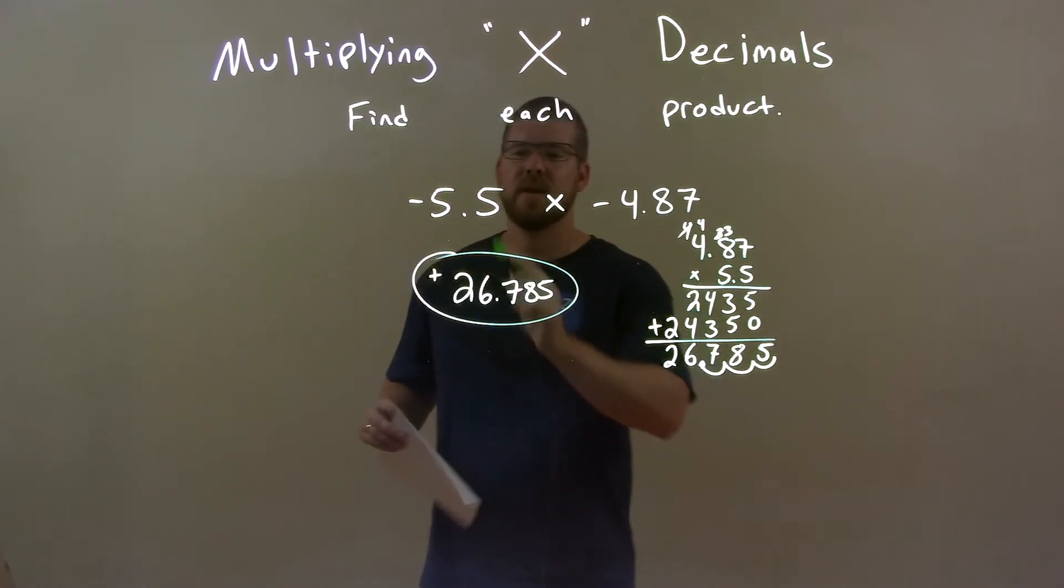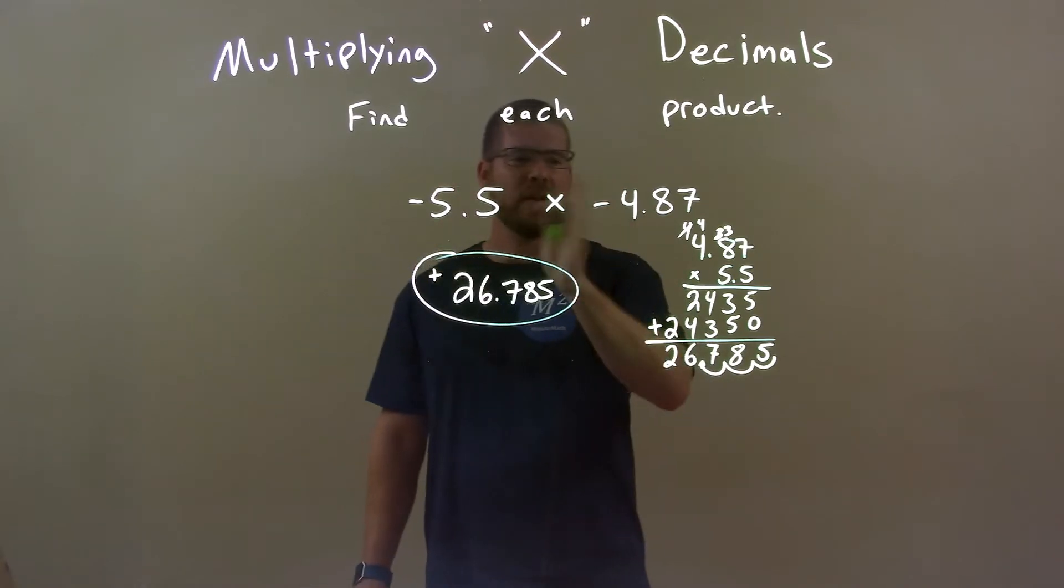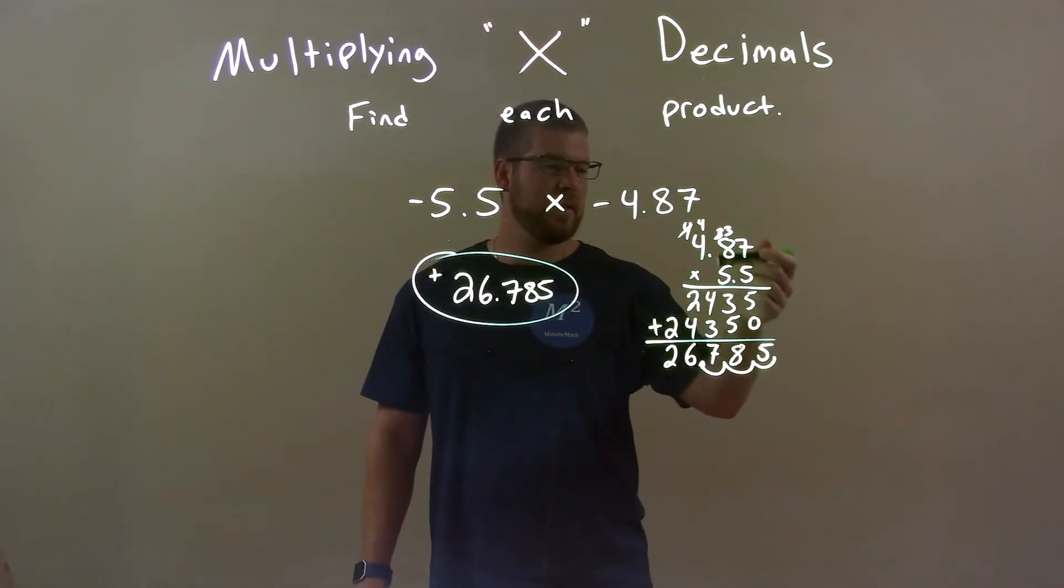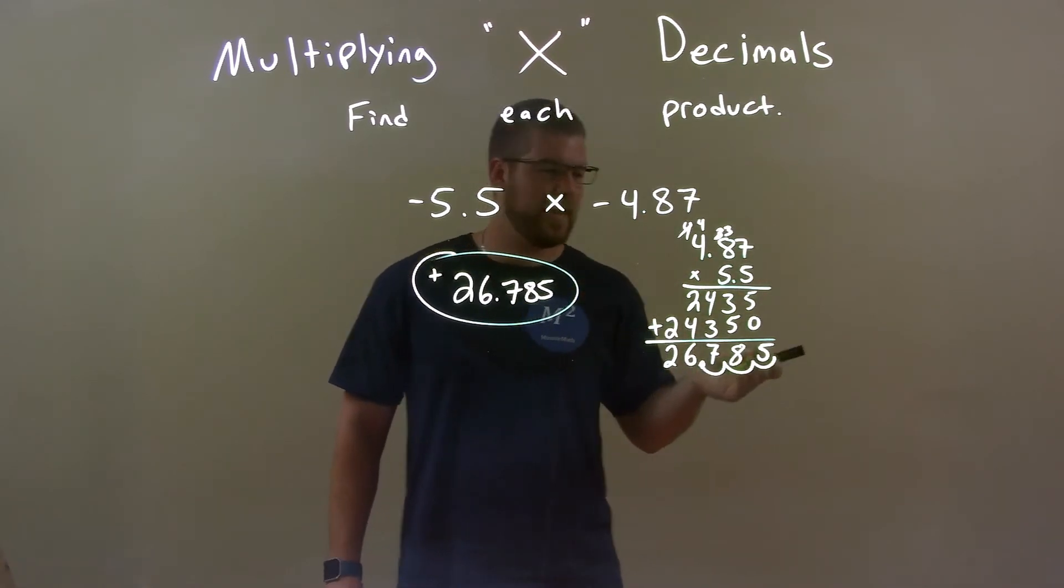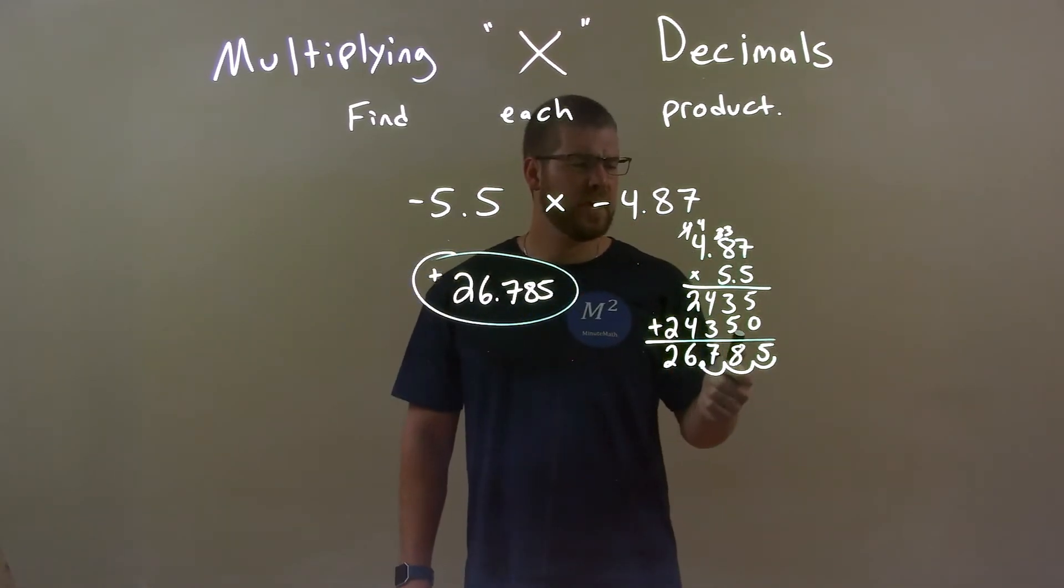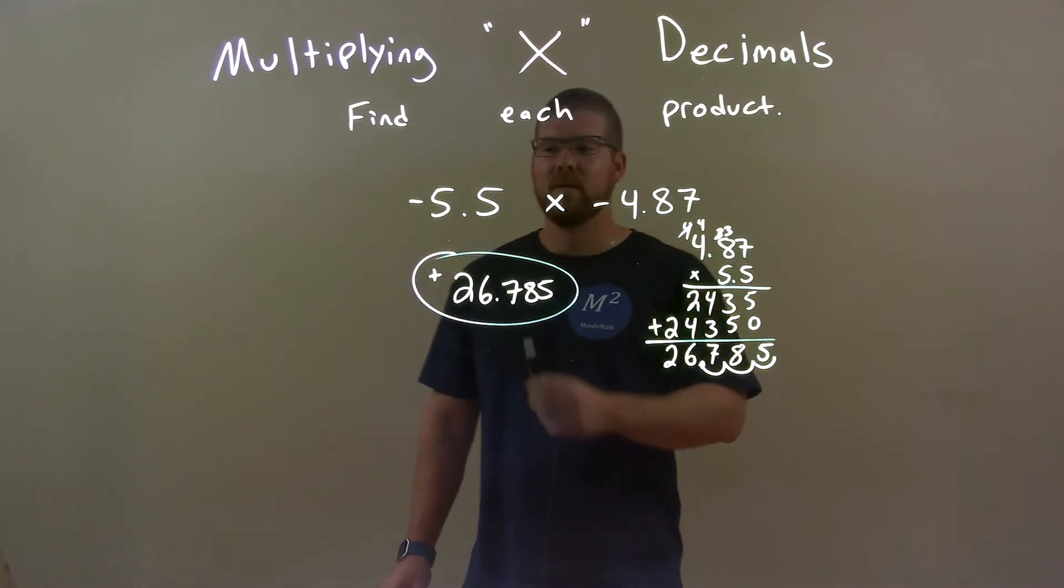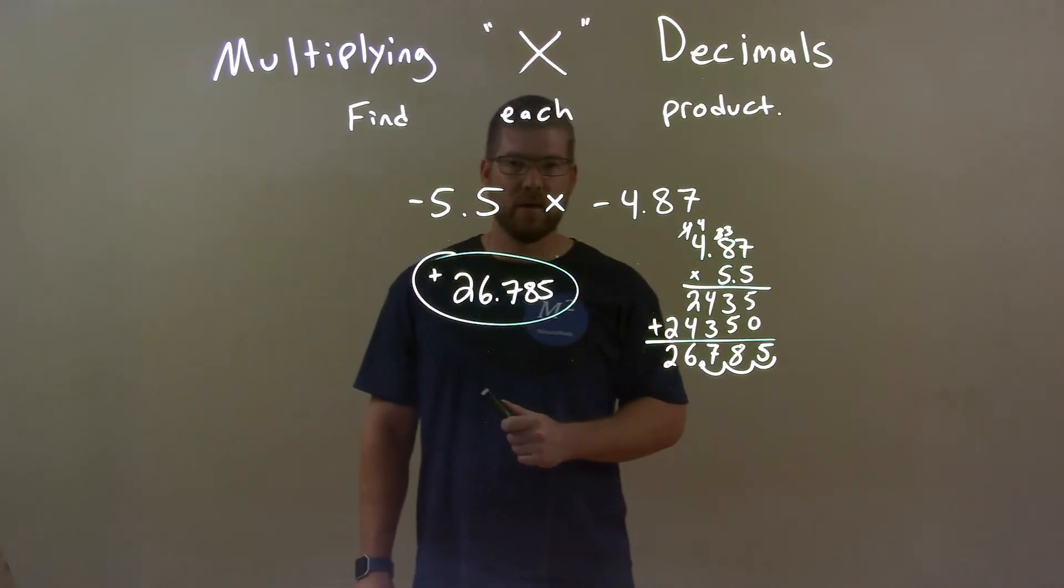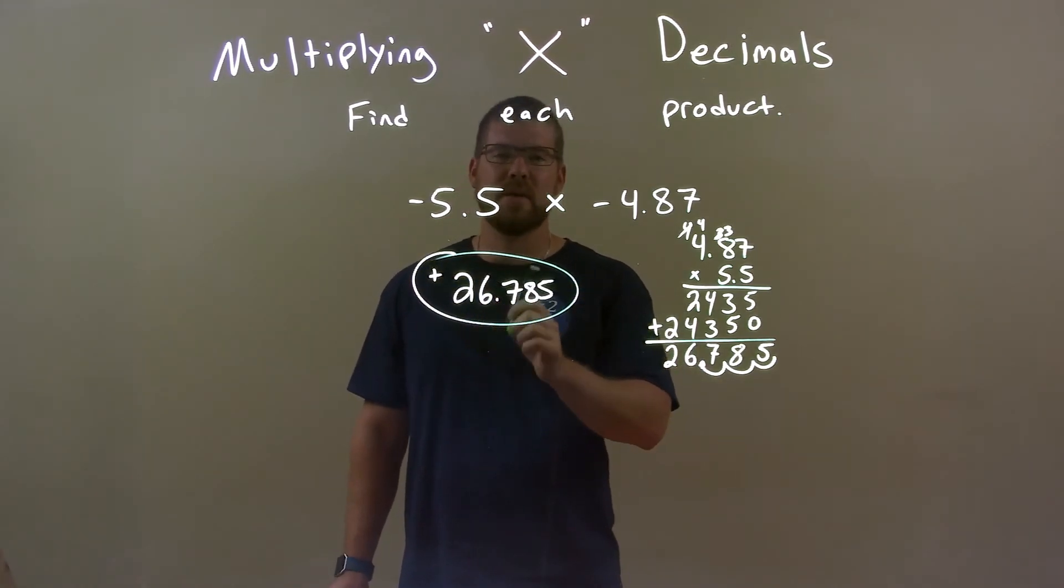So, quick recap. We're given negative 5.5 times negative 4.87. I imagined the negatives were gone and I multiplied them together. I kind of pretended the decimals weren't there. I got this large number, but then I had to add back the decimal. Three decimal places total. And we know a negative times a negative is a positive. So our final answer with all of that was 26.785.